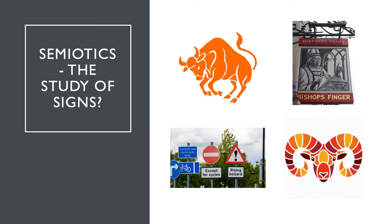Semiotics at its most basic is the study of signs, but that doesn't mean star signs, pub signs, or road signs — though each of those signs stands in for something else. When we see star signs like Taurus the bull or Aries the ram, we know what they stand for in the context of astrological signs. We know what time of year they refer to and that astrology is a method some people use to try to predict the future.